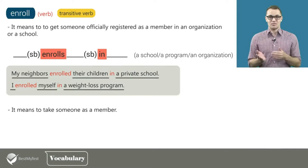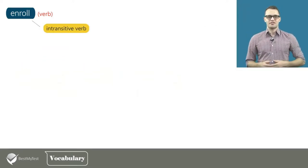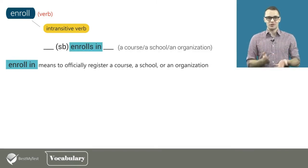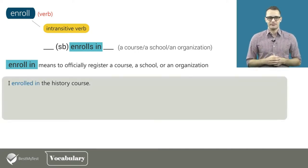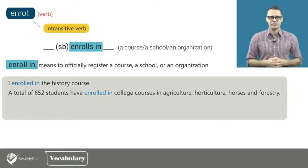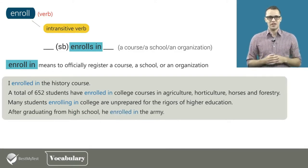Enroll can also simply mean to take someone as a member. For example: the college enrolls about 25,000 students every year. As an intransitive verb, it is followed by the preposition in. So 'to enroll in' means to officially register for a course, a school, or an organization — the pattern is 'somebody enrolls in something.' For example: I enrolled in the history course. A total of 652 students have enrolled in college courses in agriculture, horticulture, horses and forestry. Many students enrolling in college are unprepared for the rigors of higher education. After graduating from high school, he enrolled in the army.